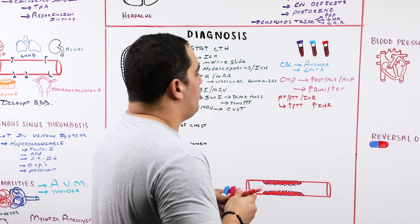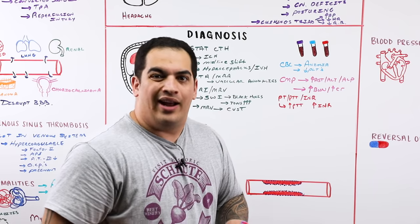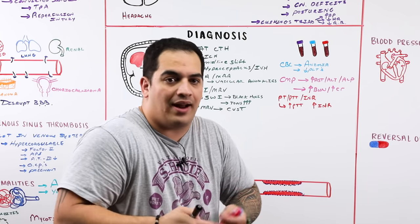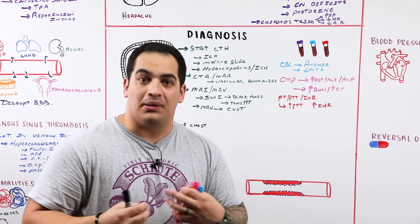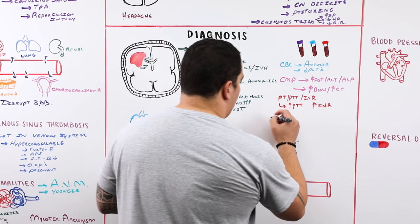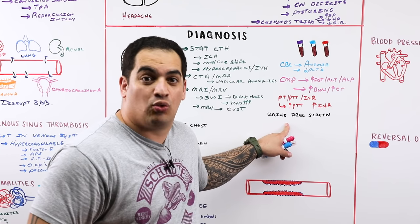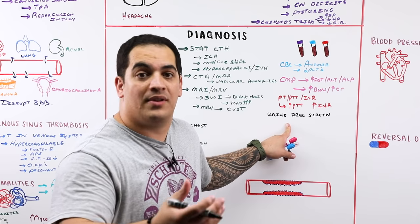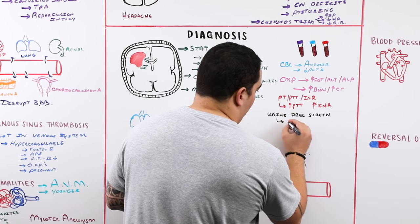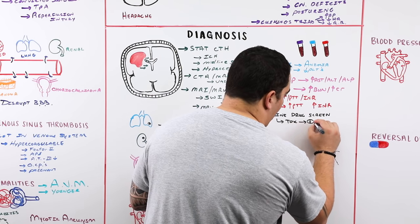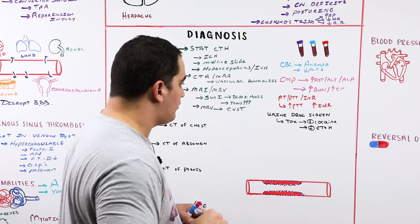A urine drug screen should also be obtained since cocaine, methamphetamines, and alcohol are risk factors for ICH. This is important both for identifying the cause and for preventing future bleeds by addressing these risk factors.